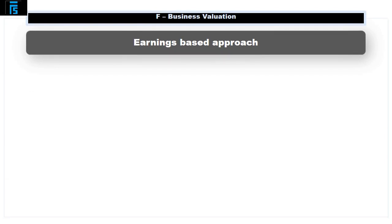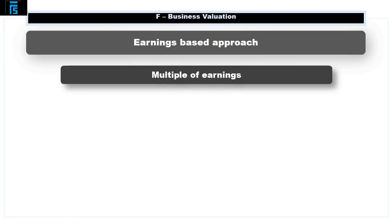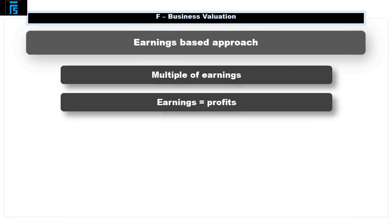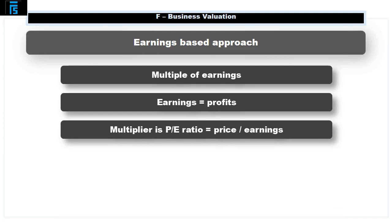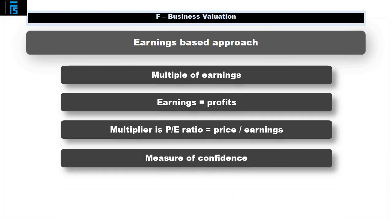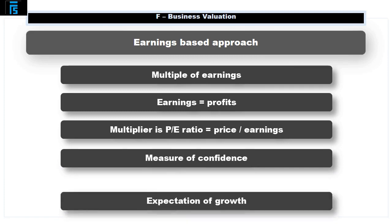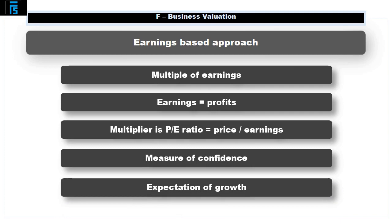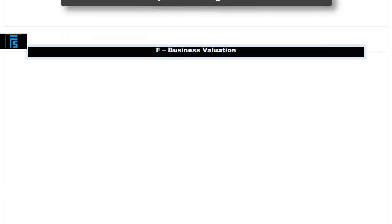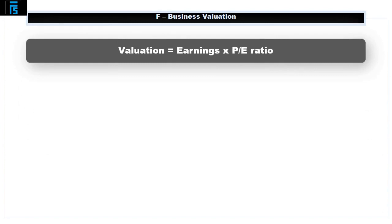Weaknesses of this approach are: it is difficult to estimate the dividend growth rate; the model assumes the dividend growth is constant; not all companies pay dividends, and this model would value such businesses at nil; and the model would produce a negative value for an organisation where the dividend growth rate is higher than the cost of equity. Earnings-based approach. A company can be valued as a multiple of its earnings. Earnings are the profits that are distributable to equity shareholders, and the multiplier is provided by the price-earnings, or PE, ratio. The PE ratio is effectively a measure of confidence that the market has in the company — it reflects market expectations of growth set against inherent risk levels. The valuation is simply the earnings multiplied by the PE ratio.